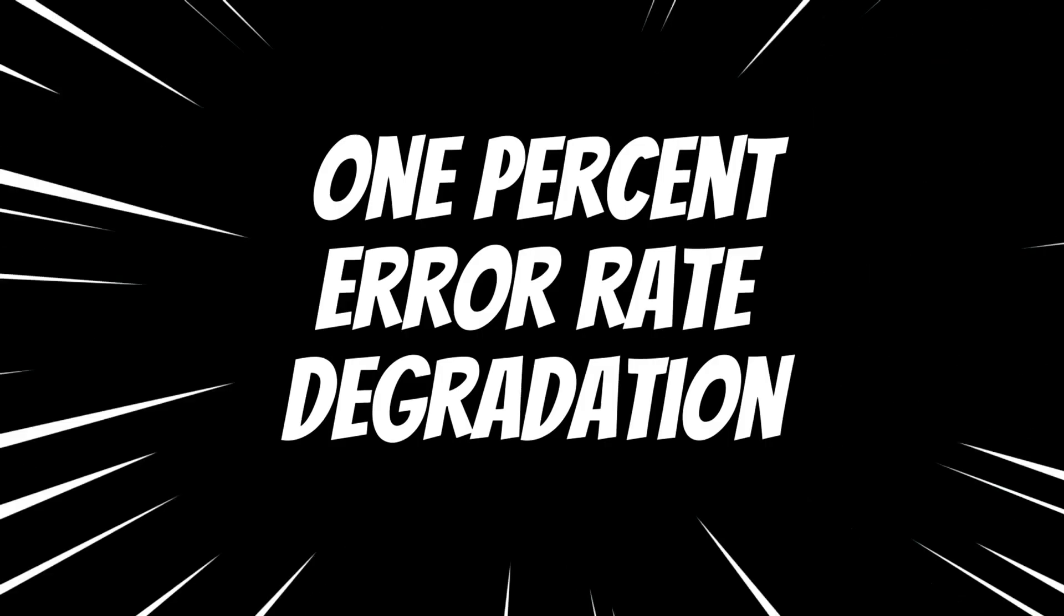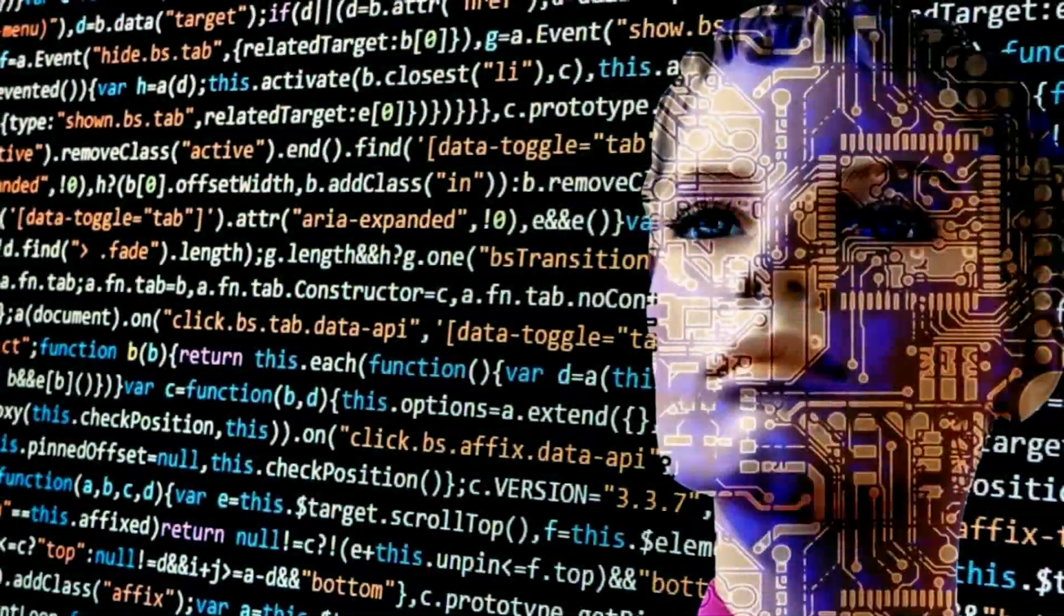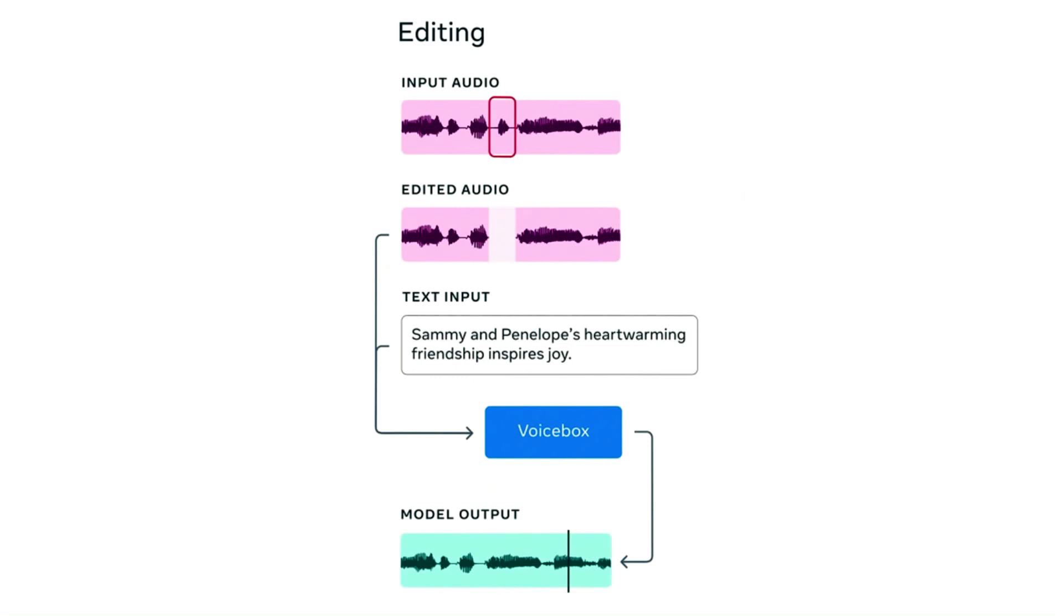Meta asserts that its model has a significantly lower 1% error rate degradation compared to other models. In the training process, Meta researchers employed a method where it predicted speech blocks within a transcript, rather than building it from scratch.